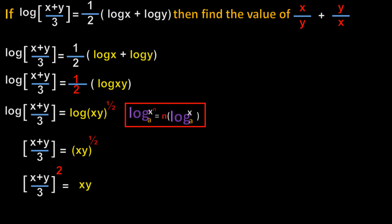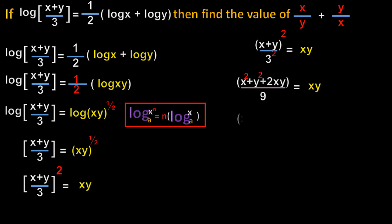Now (x + y)/3 whole square is in the form of (a/b)^m. So using the laws of exponents we can write it as (x + y)² / 3² which equals xy. Now (x + y)² is in the form of (a + b)², so by expanding we get (x² + y² + 2xy) / 9 = xy. Transposing 9 to the right hand side gives x² + y² + 2xy = 9xy. Then transposing 2xy to the right hand side gives x² + y² = 7xy.